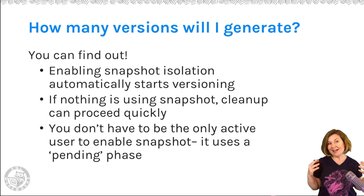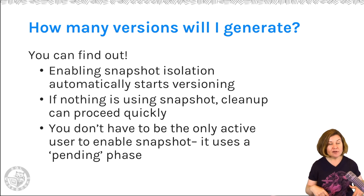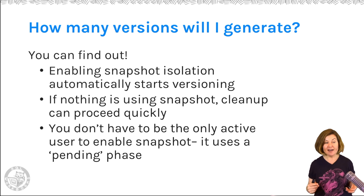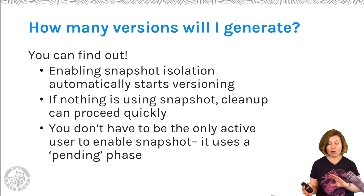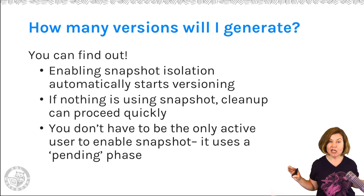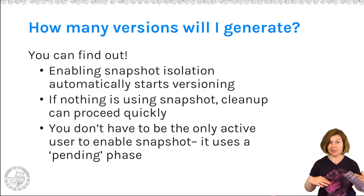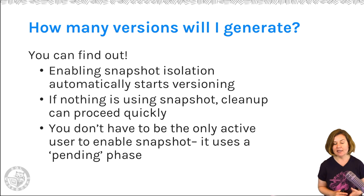When you turn on the feature for allowing snapshot isolation, versions immediately start being generated — you don't have to have anybody actually using snapshot isolation. So you can enable it and then look at what your performance is like and compare it to a baseline you did before you changed anything. You can also disable snapshot isolation whenever you want because nobody has started using it yet.